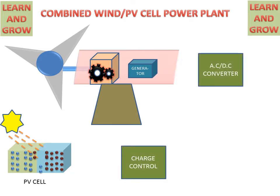Then after the wind turbine, we have AC-DC converter for converting AC to DC or DC to AC. And PV cell has a charge controller for controlling the charge.